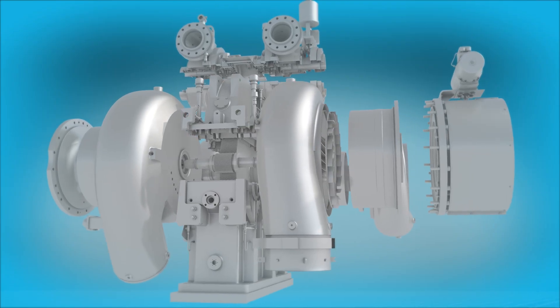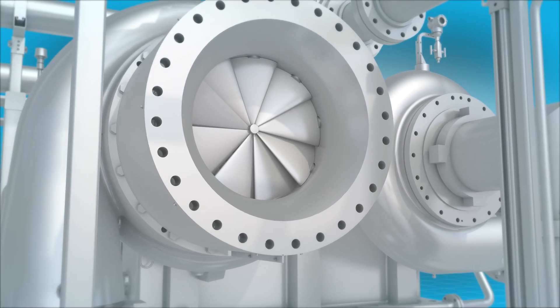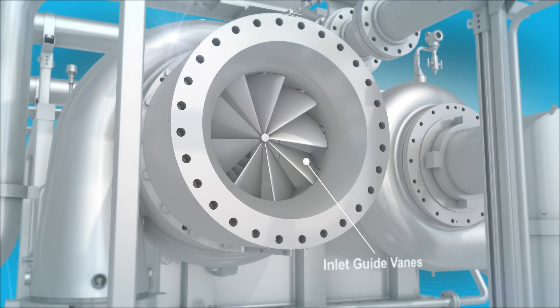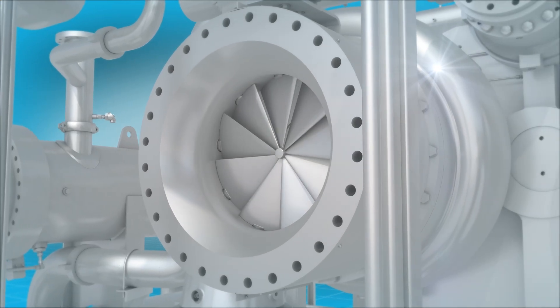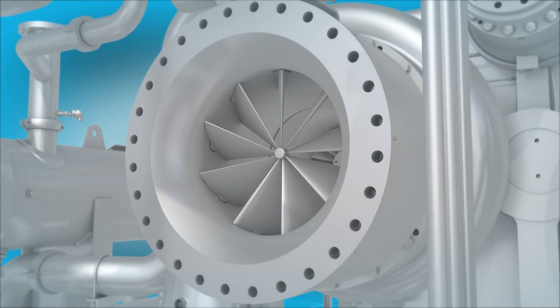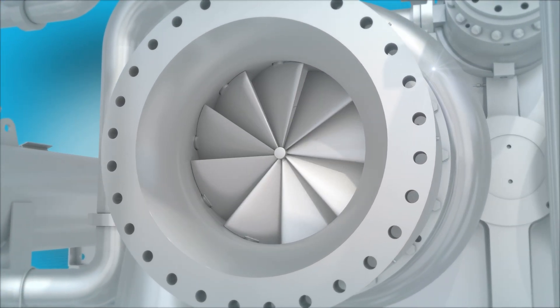The compression process begins with gas entering through adjustable inlet guide vanes, or IGVs, which are standard on all Atlas Copco compressors. IGVs control how much flow is sent into the machine, providing accurate process control.